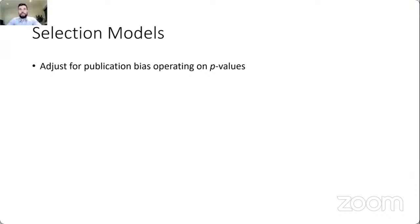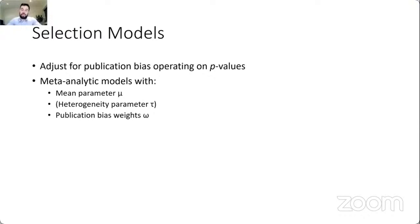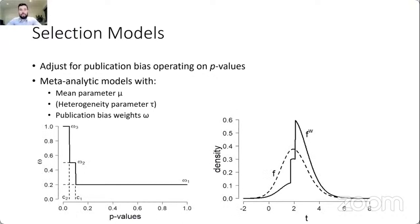Selection models extend the traditional random, mixed, or fixed effect meta-analytic model with parameters mu, the heterogeneity parameter tau, and publication bias weights omega. We use a step weight function that specifies different publication bias probabilities for different p-value intervals. We can fix the relative publication probability of significant studies to one, and estimate the relative publication probabilities of marginally significant or non-significant studies. As a result, you obtain a different likelihood function: the unweighted likelihood F versus the weighted likelihood FW, which takes different publication probabilities at different p-value intervals into account.